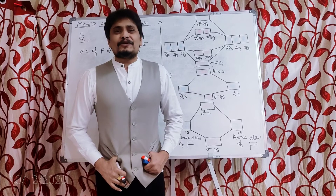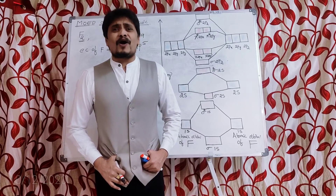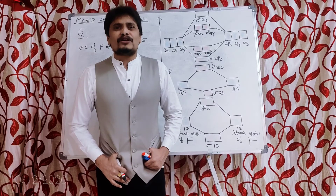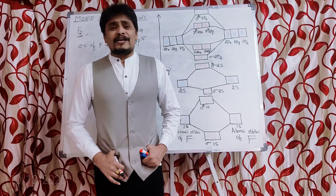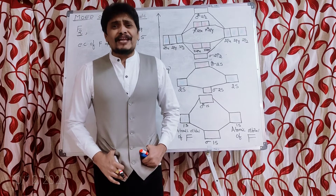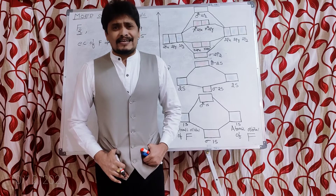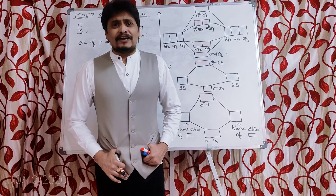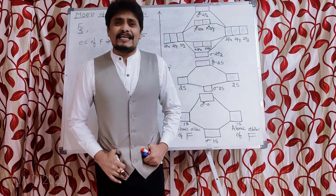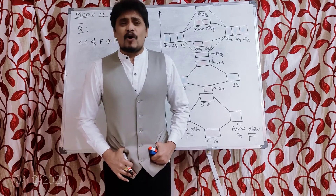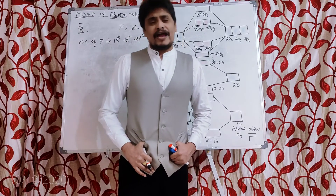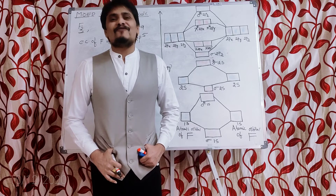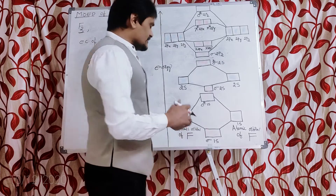The Pauli exclusion principle states that the maximum number of electrons in an atomic orbital or molecular orbital is two. Hund's rule states that pairing of electrons does not take place unless each and every orbital of the same energy level is filled with one electron. We must keep all three postulates in mind while constructing the molecular orbital energy diagram.